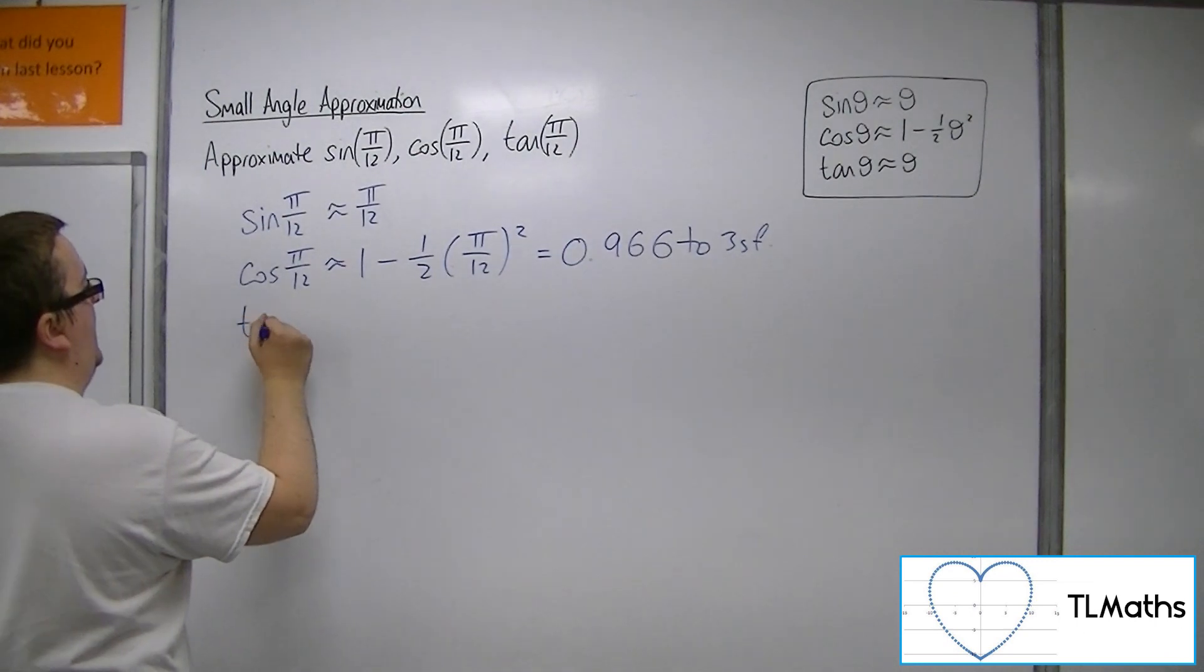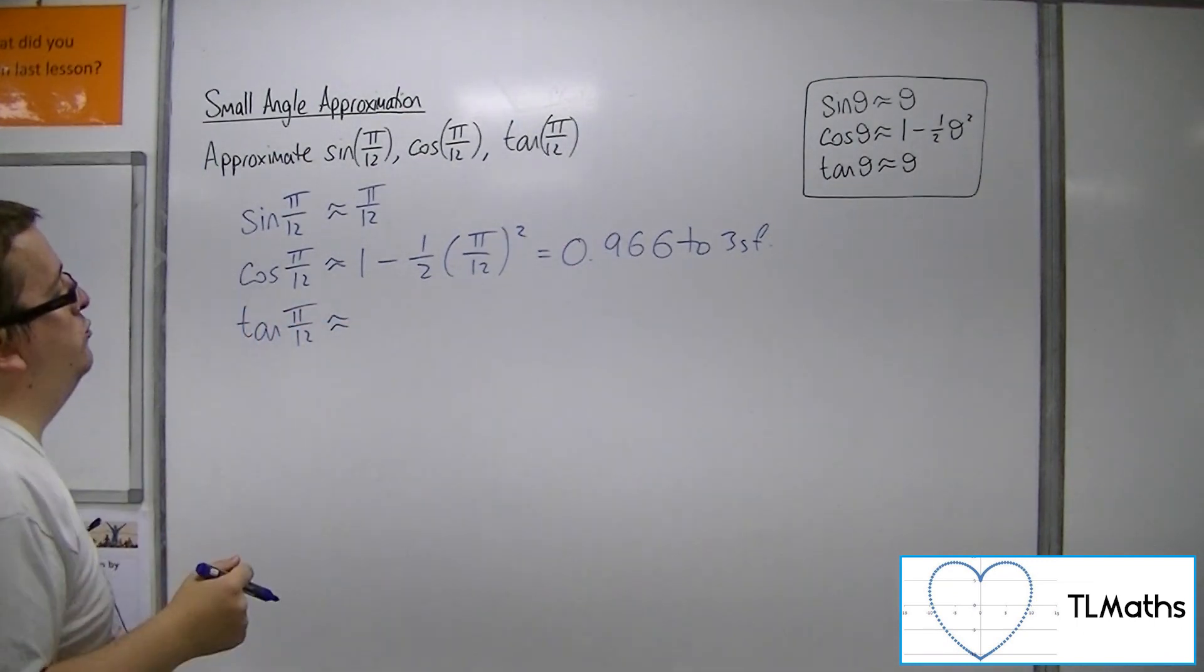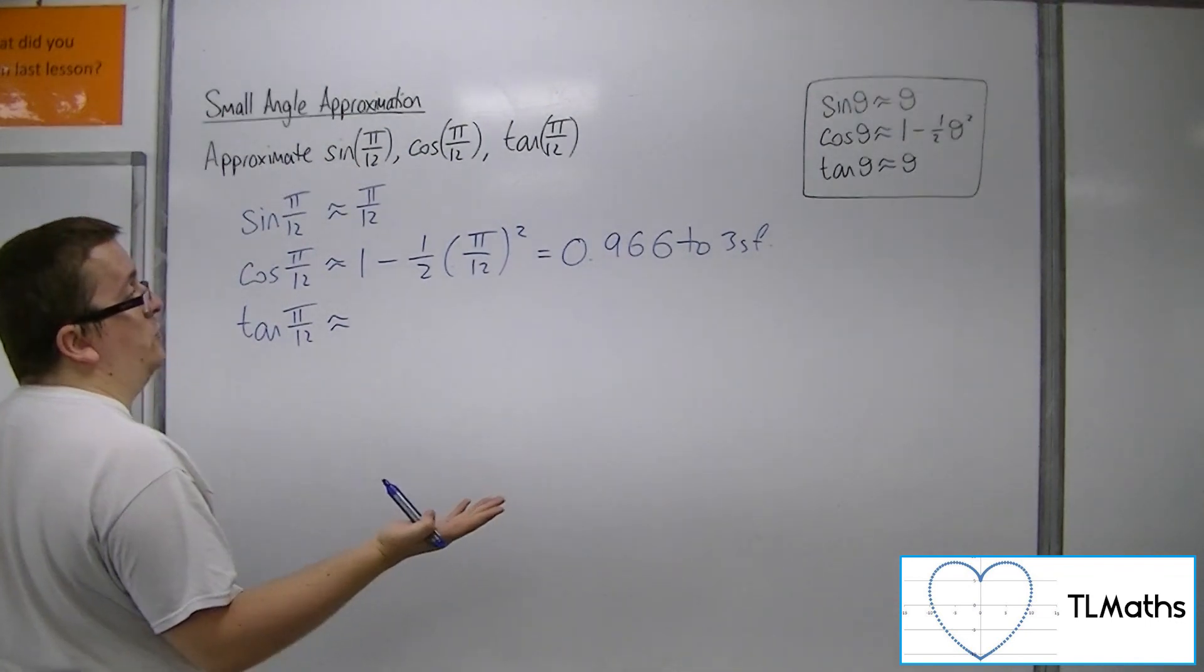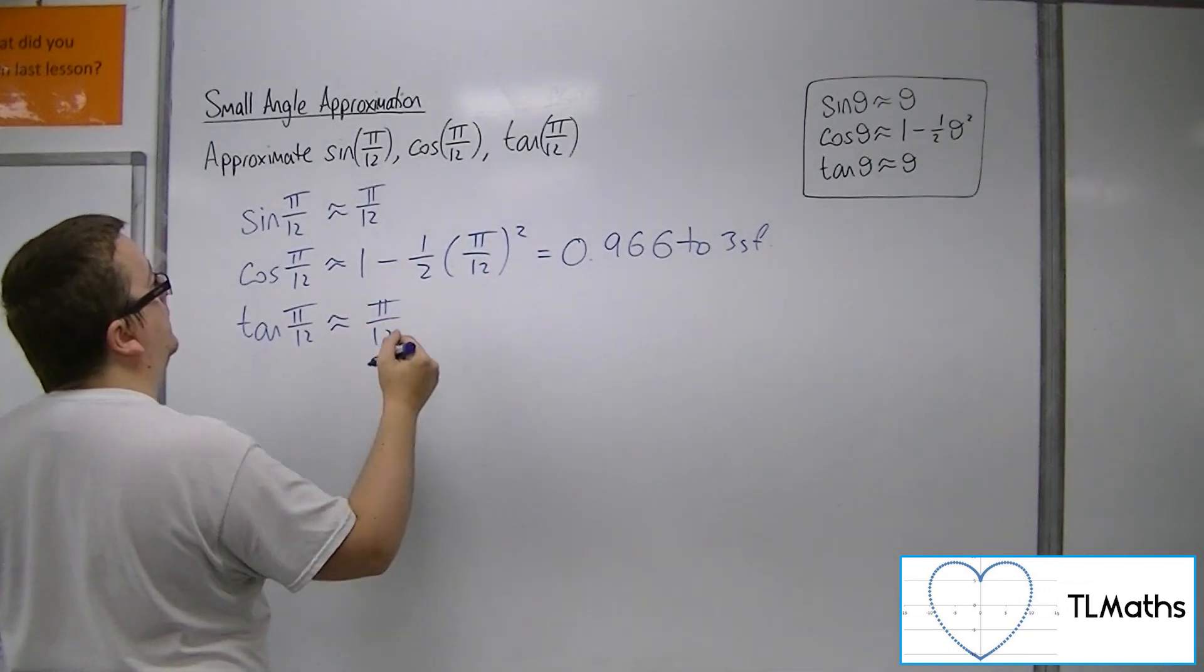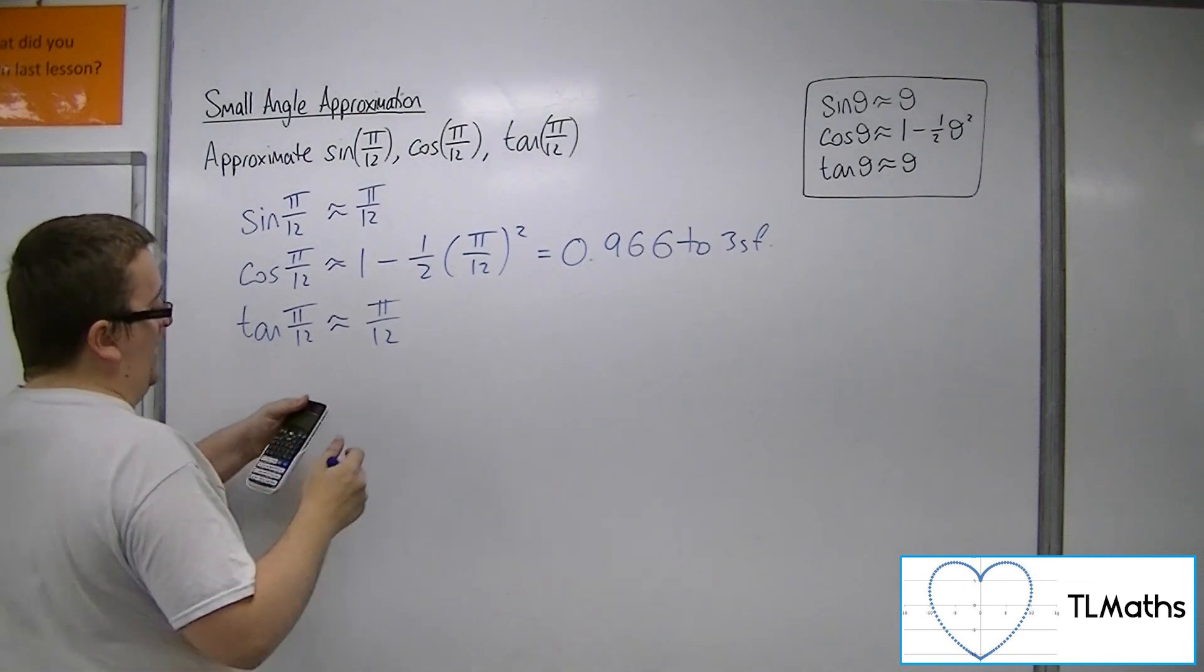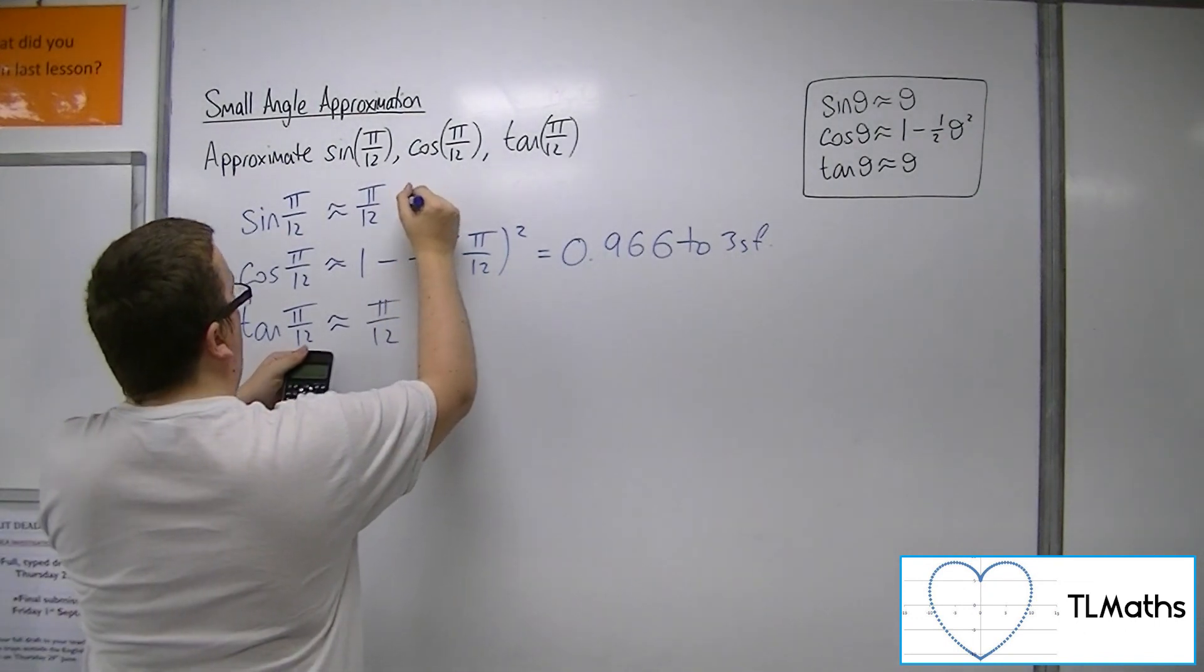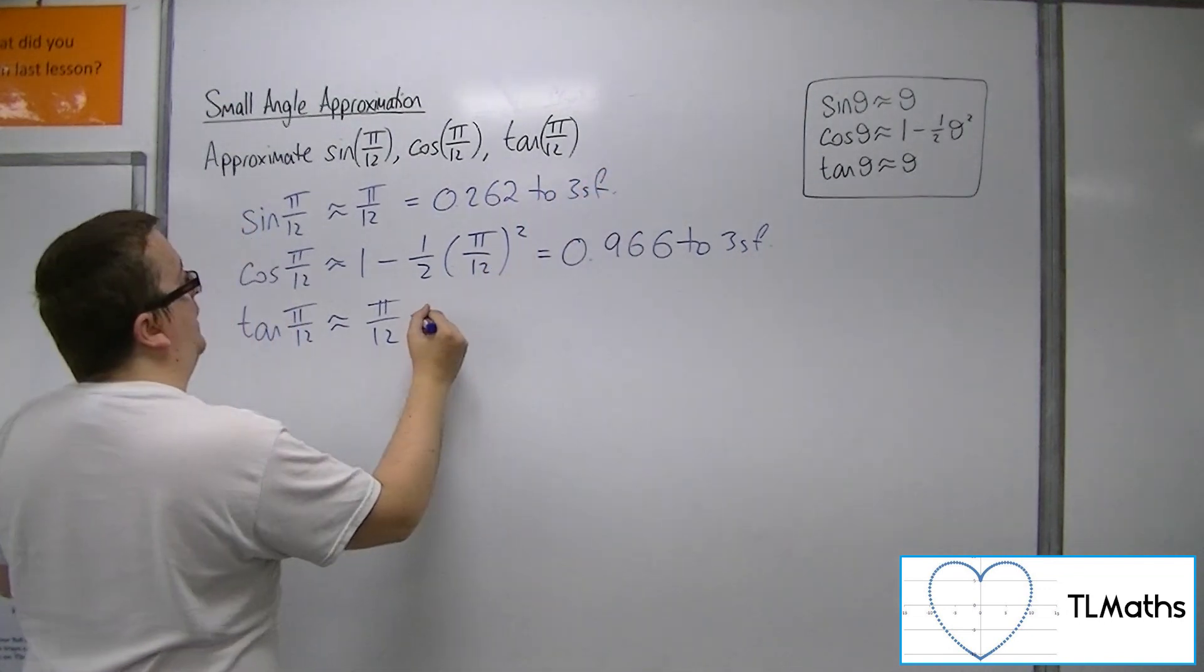And then finally, tan of π/12 is approximately, well, tan of theta is approximately theta, so tan of π/12 is going to be approximately π/12. So if we work out what π/12 is as a decimal, then that's 0.262 to three significant figures.